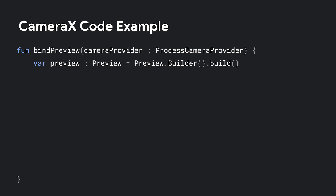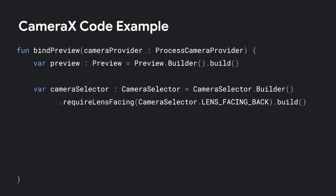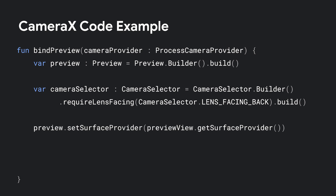Let's take a look at a simple CameraX example where we'll get a live preview on screen. First, we create a preview use case from CameraX. Next, we create a camera selector — the camera selector will search for a desired camera on the device. In this example, we create a camera selector that will search for the back-facing camera. Then we get a handle to a preview view from CameraX's camera view package. This is an easy way to add a view containing the camera.